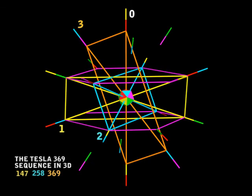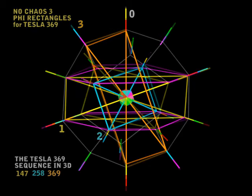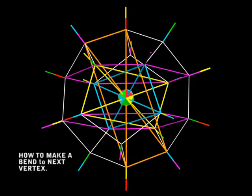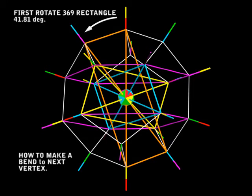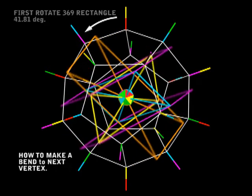And Tesla said, if you only knew about 3, 6, 9. And I don't think he mentioned anything about chaos. Now I'm going to show you how we can make a bend. I'll start this by showing you the direction of the bend with an arrow. Now first we'll make a 41.81-degree turn on the axis of the 369 rectangle, the orange one.